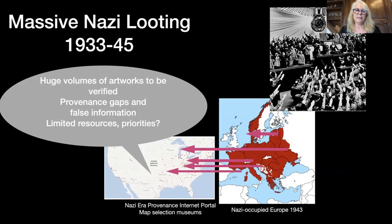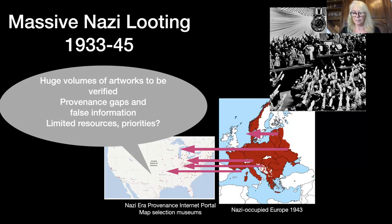The art that interests me is art that changed hands from 1933 to 1945. The Nazis engaged in massive looting — the greatest looting campaign in the history of the world. They targeted, in particular, Jewish individuals, expropriating them and murdering them. Today we are left with a legacy of a huge volume of artworks that still need to be verified. There are provenance gaps and a lot of false information. And to deal with this, we have very limited resources.